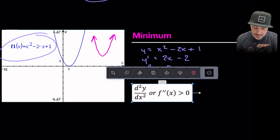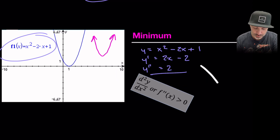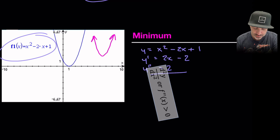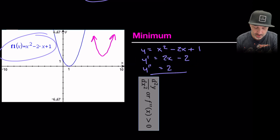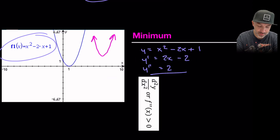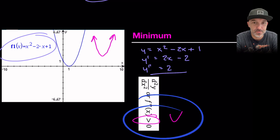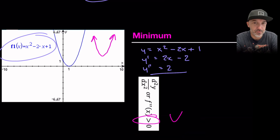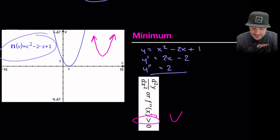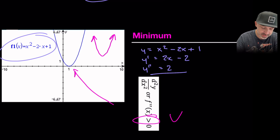A way of remembering this is to rotate the inequality symbol 90 degrees to the right — not a mathematical solve, just a memory trick. When we rotate 'f'' > 0' we can see it has a concave up shape, which matches exactly what we have in the graph.